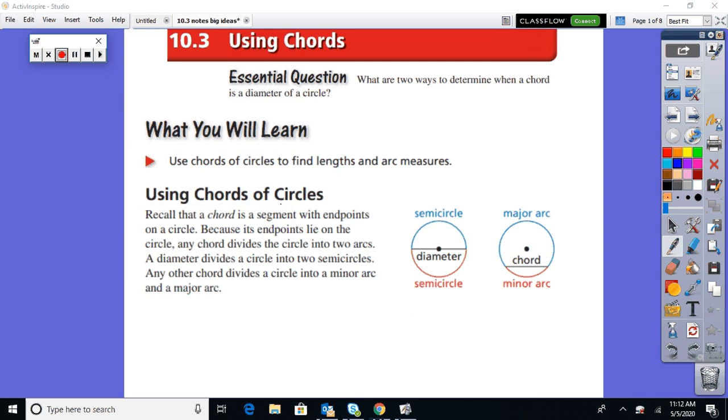All right, back again, knocking out chapter 10, and this is 10-3, using chords. Not like a musical chord, but a circular chord. And our central question, what are two ways to determine when a chord is a diameter? So we're going to talk about some things like that today.